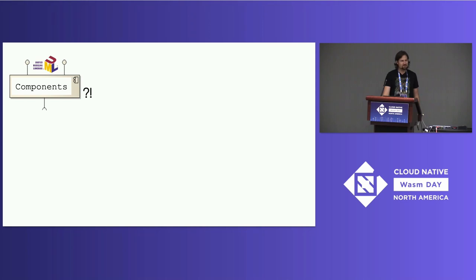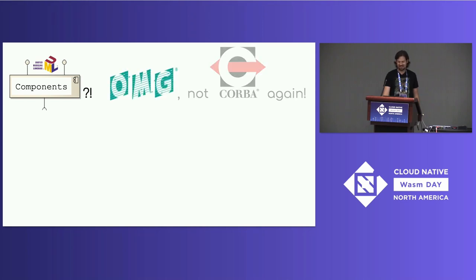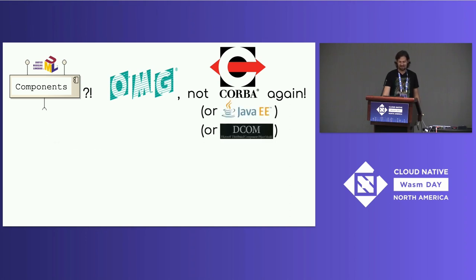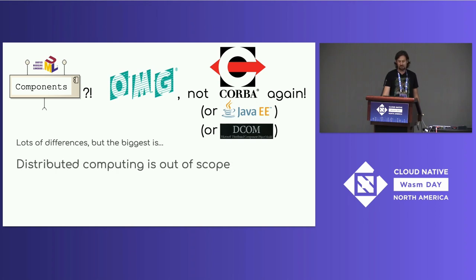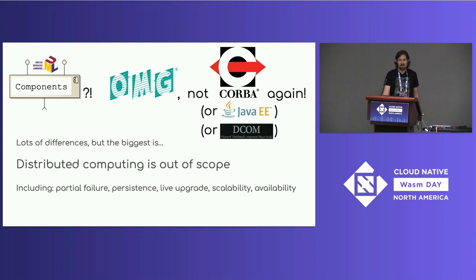If you've been around the block a few times, you might be saying "components — not CORBA again" or Java EE or MSCOM, because we've seen this before. The big difference I'd like to point out is that distributed computing is out of scope for the component model — meaning partial failure, persistence, live upgrade, scalability, and availability. These are definitely important problems but not something we can automagically solve in the component model. Instead, we're leaving these up to a higher layer like the platform, embedding, and future higher-level specifications.